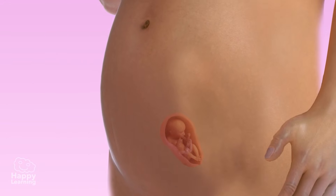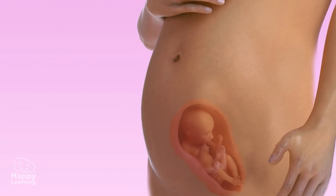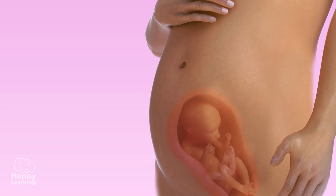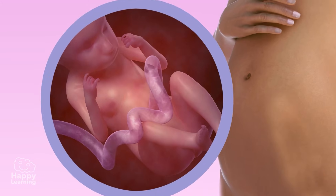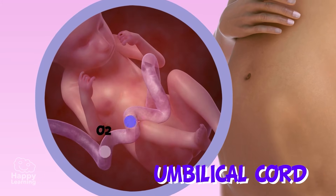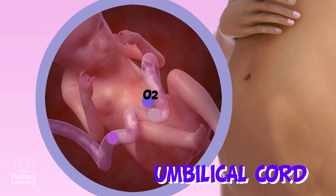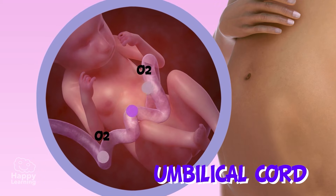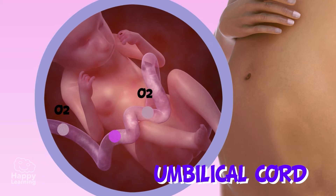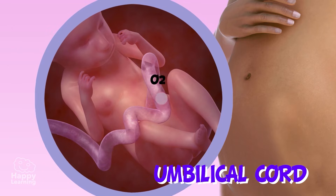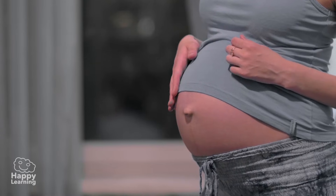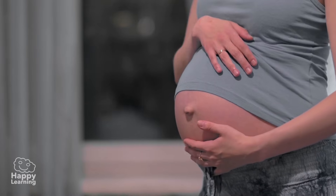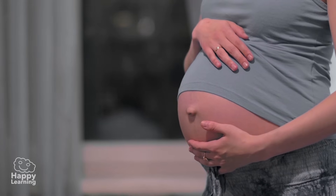The baby continues to grow, developing all its organs. In only two months of gestation, the embryo already looks like a baby. The baby receives its nutrition and oxygen through the umbilical cord, and the mother's body also goes through big changes — her tummy, for example, grows much bigger.